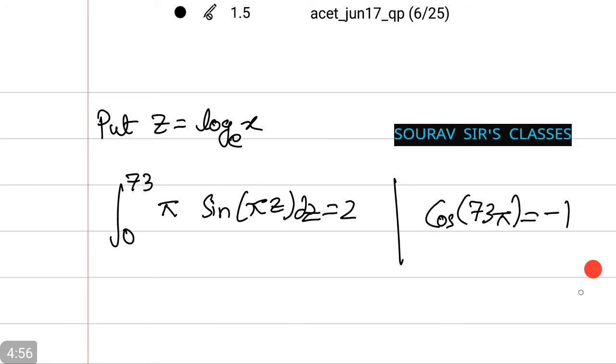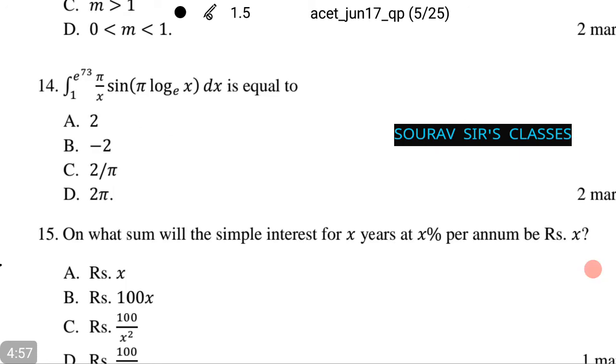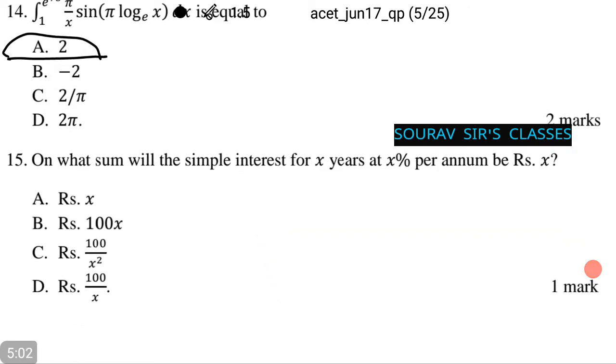Thus the answer is option number A. Moving on to the next question, on what sum will the simple interest of x years at x percent per annum be rupees x?